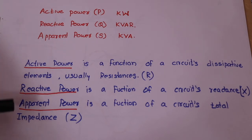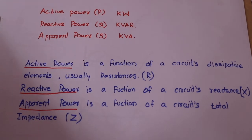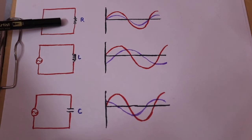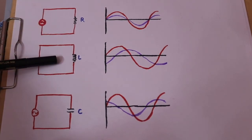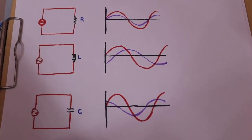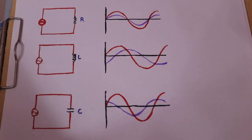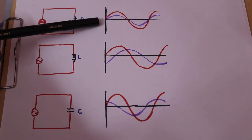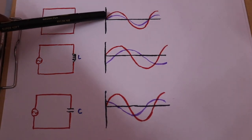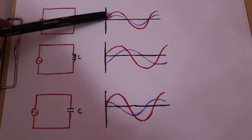Here we have two circuit types for apparent power. This first one is a pure resistive circuit. The second includes an inductor and capacitor with resistance. This is a pure resistive circuit shown with its waveform — the red line is the voltage waveform and the blue line is the current waveform.